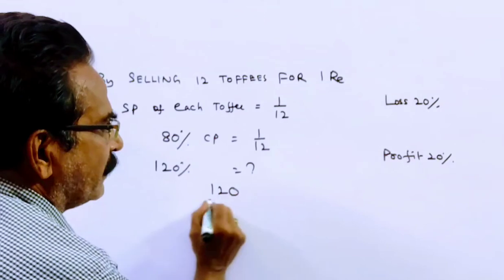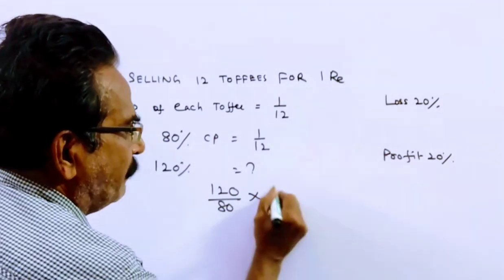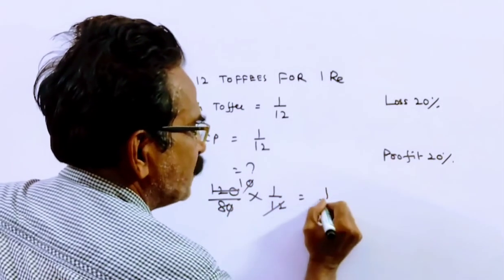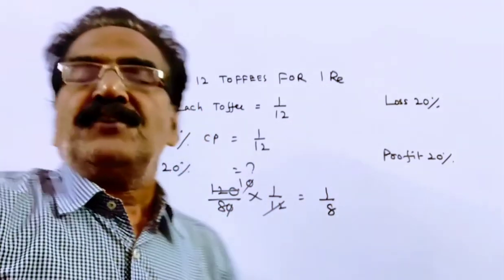120 upon 80 into 1 by 12. Tens, zero, zero cancel. So, 1 by 8.